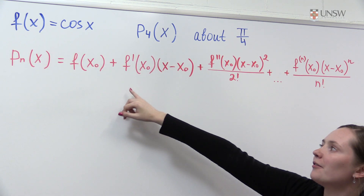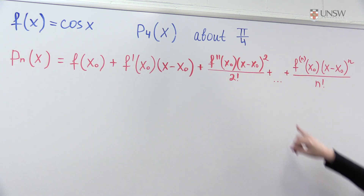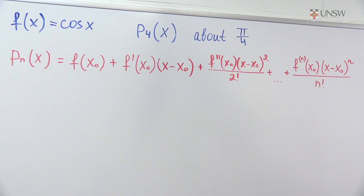In our case we will have the polynomial of degree 4, so here we will have n equals 4. Therefore we need to find four derivatives of the function.